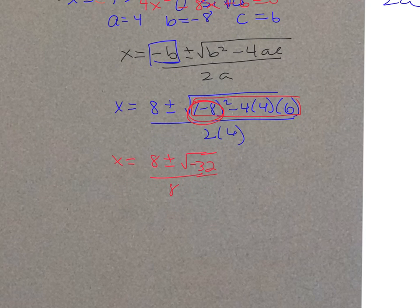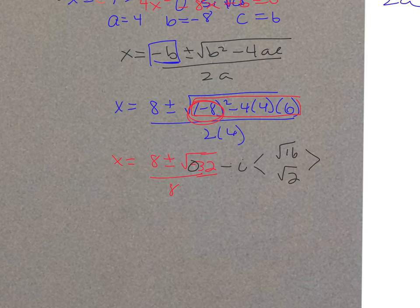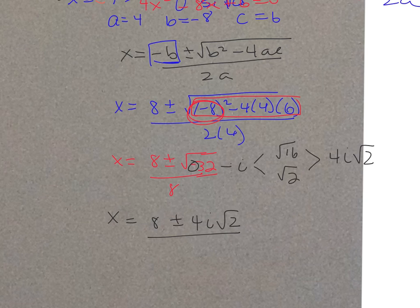Now simplify √(−32). The negative becomes i. What perfect square goes into 32? That's 16 and 2. The square root of 16 is 4, so √(−32) = 4i√2. Rewriting: x = (8 ± 4i√2) / 8.